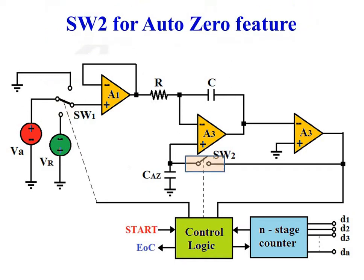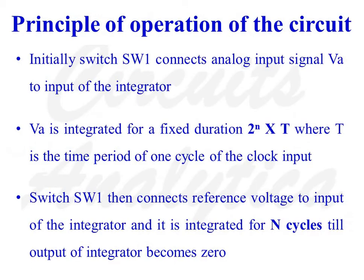Switch SW2 is used for the auto zero feature. Basically there are two phases in the operation of the circuit. Initially, switch SW1 connects analog input signal VA to the input of the integrator during phase 1. So VA is integrated for a fixed duration of 2 raised to n multiplied by T, where T is the time period of one cycle of the clock signal.